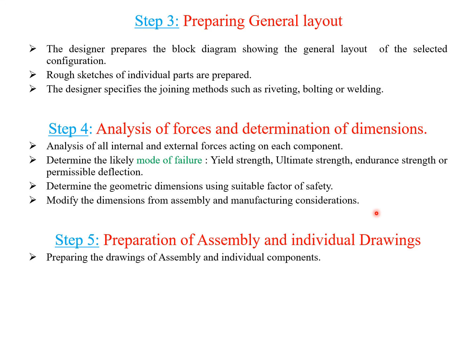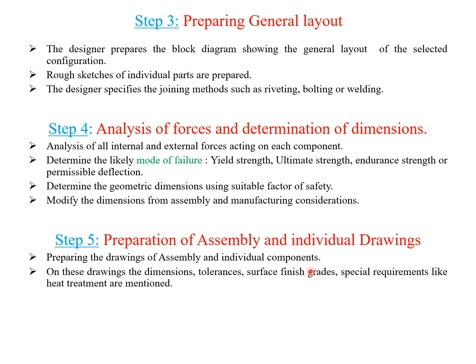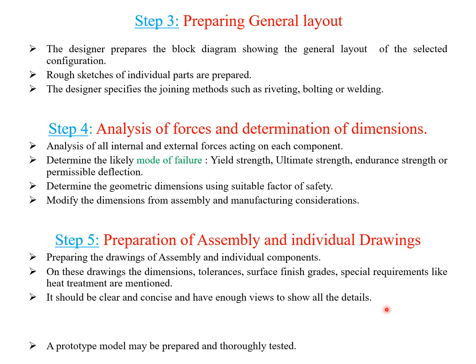Step five is the preparation of assembly and individual drawings. Drawings of the assembly and individual components are prepared. Dimensions, tolerances, surface finish, and specific requirements like heat treatments are mentioned in the assembly drawing, which should be clear and concise with enough views of all details.